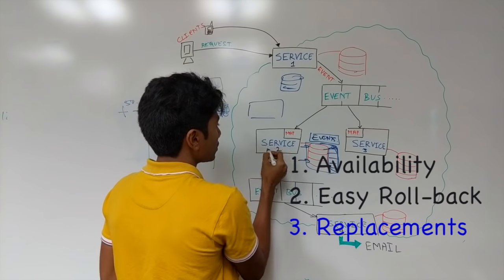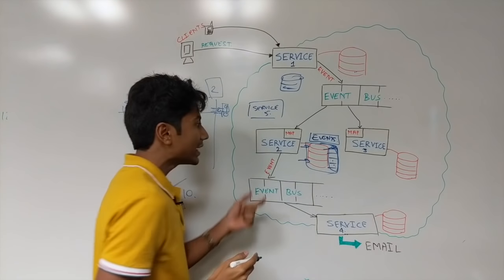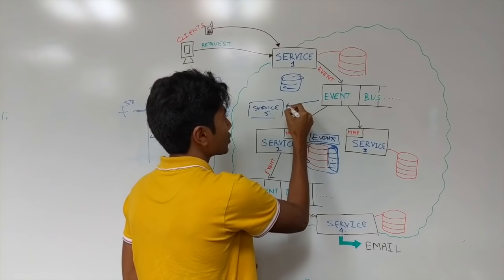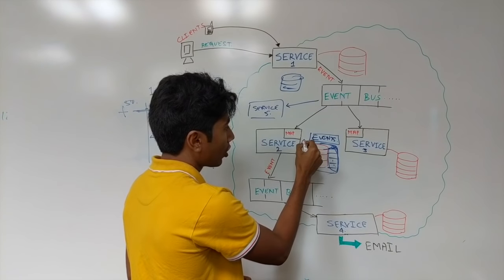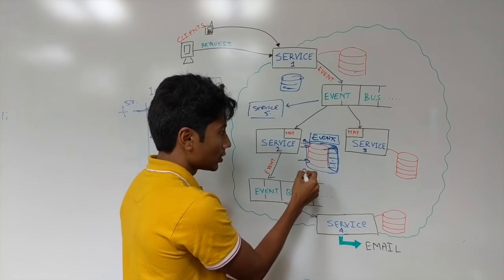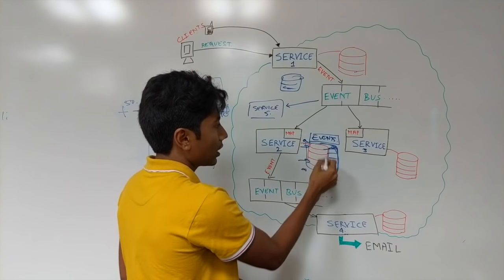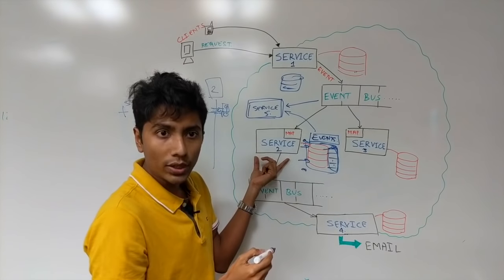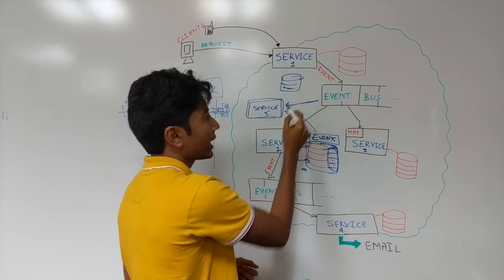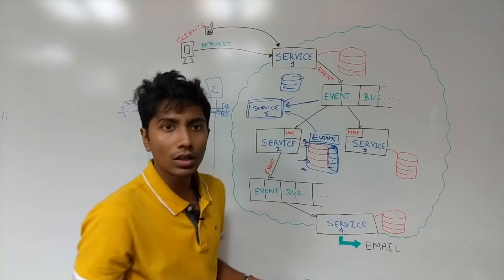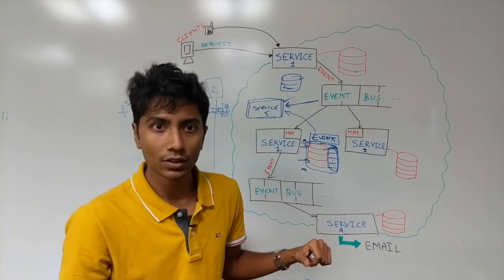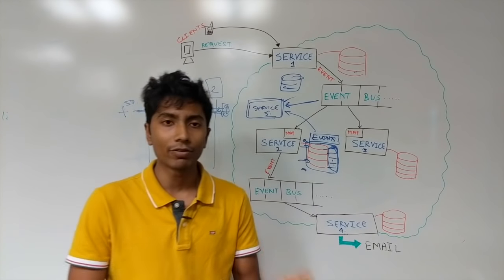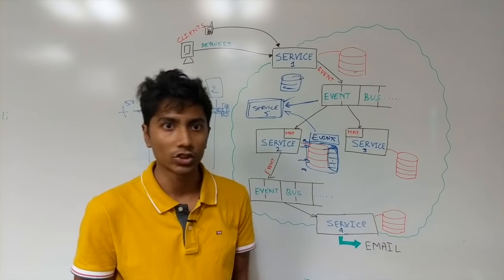Let's say you write a new service — service 5 — which needs to replace service 2. It's very easy. All you need to do is ask the event bus to send you all the new events. Before that, you take all events from timestamp 0 to the current timestamp, replay them into service 5, and service 5 will be consistent with service 2. Then it's already accepting newer events and comes online — a smooth replacement instead of the clunky bits we have in non-event-driven architectures.